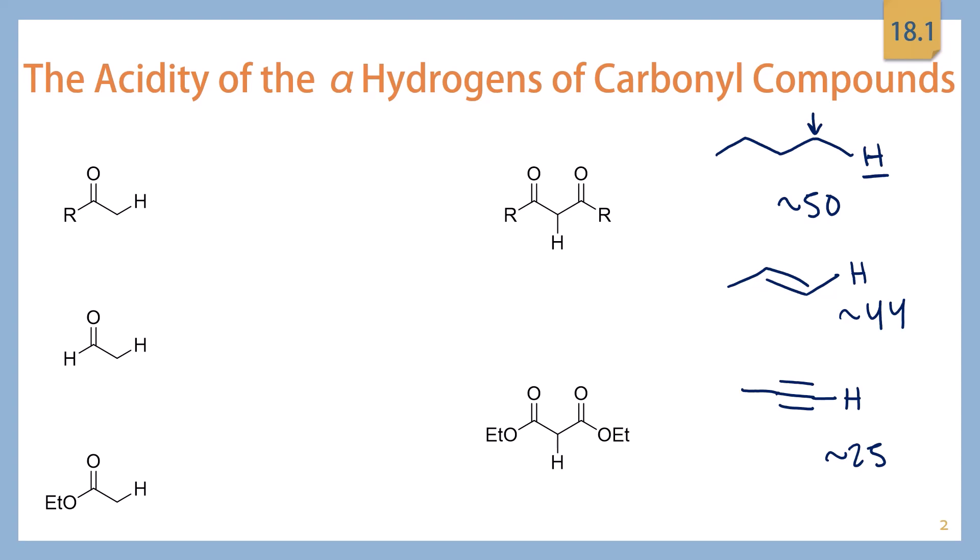Now, the pKa that's sitting on a ketone or an aldehyde is going to be about 19 to 20 for both of these. And I realize it's kind of a narrow range, but most of the values will fall in that area. And notice for the aldehyde, we are talking about the alpha hydrogen, so the one on the alpha carbon, and not the aldehyde hydrogen. That's not what we're going to pull off. Now for an ester, the pKa of a hydrogen on the alpha carbon of an ester is about 25. So more similar to an alkyne.